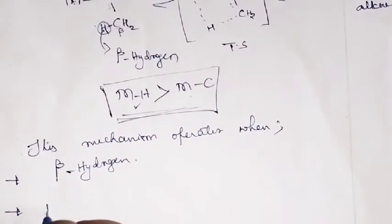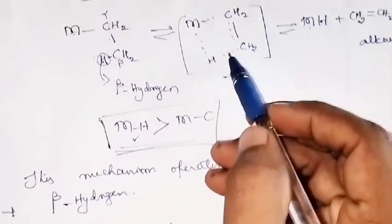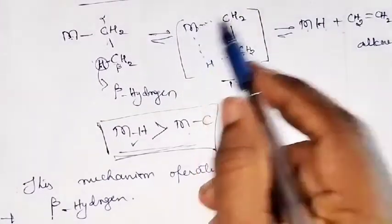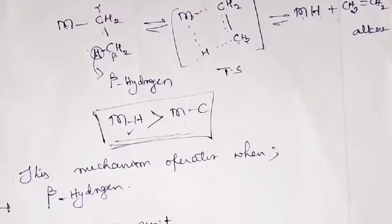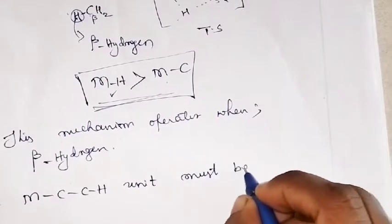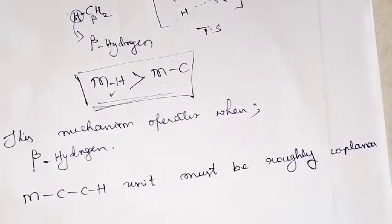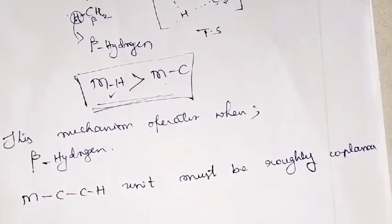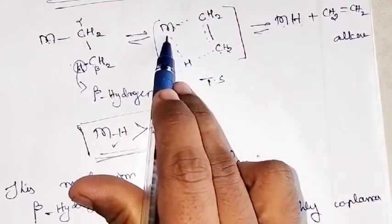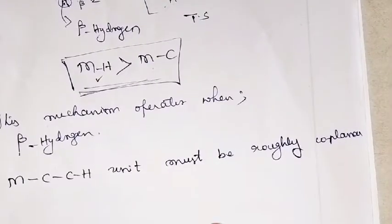In the transition state, the M-C-C-H unit must be roughly coplanar. That is, the M-C-C-H unit must have a roughly coplanar conformation so that this H is brought closer to the metal.